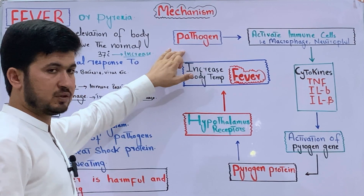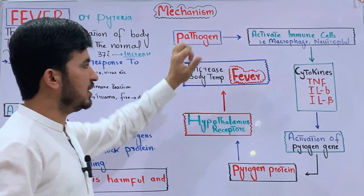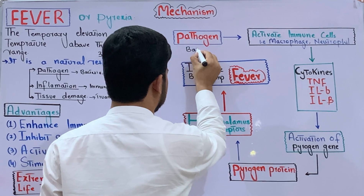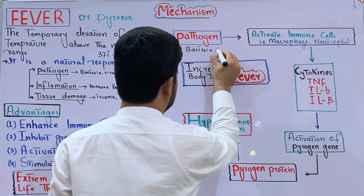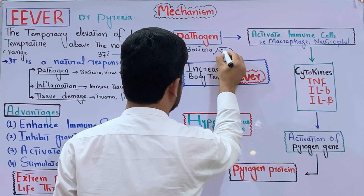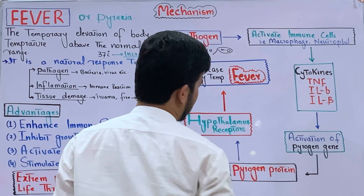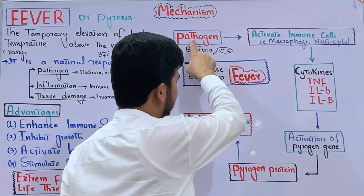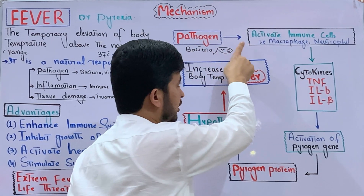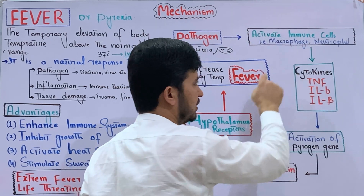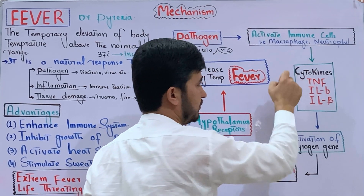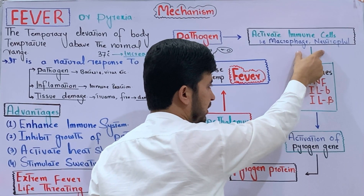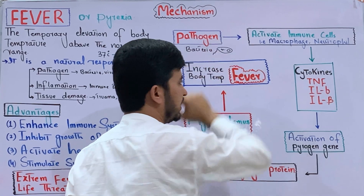A pathogen enters the body — for example, bacteria or virus. When the pathogen enters, it activates the immune cells — for example, macrophages and neutrophils. These immune cells become activated in response to the pathogen.